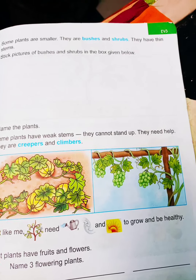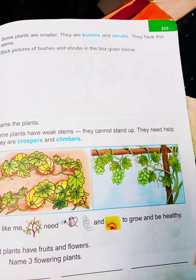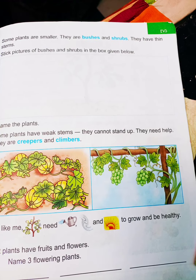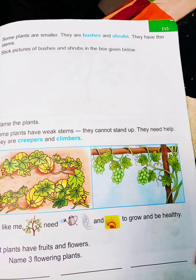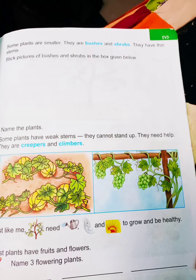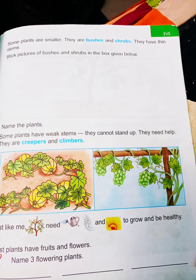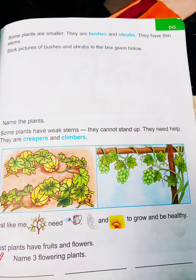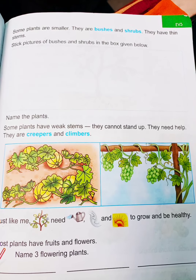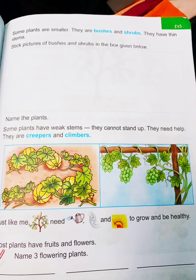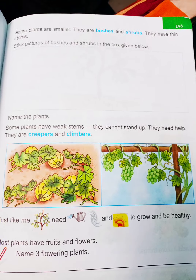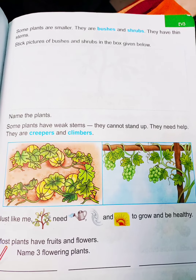Some plants climb up taking the support of walls, other plants, or sticks — these are called climbers. Grape plants and money plants are examples of climbers. Some plants grow along the ground — these are called creepers, such as pumpkin and watermelon.